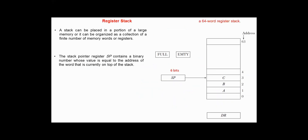A stack can be implemented using registers or using memory. Here we have a 64-word register stack, so the size of the stack pointer should be at least six bits, since two to the power six equals 64. We have three items in this stack — A, B, and C. Item C is at the top of the stack, so the content of the stack pointer is three.